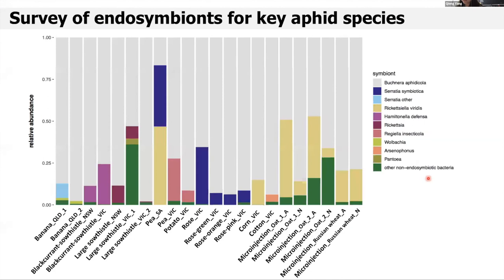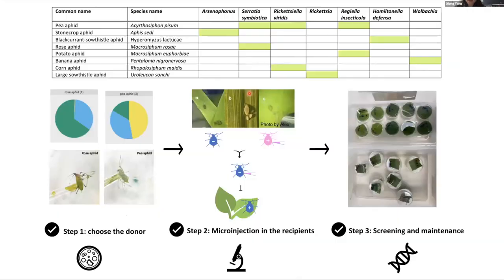First, we conducted a survey of endosymbionts for key aphid species in Australia. We want to select endosymbiont species as candidates for downstream microinjection. The bar chart here shows the interesting secondary endosymbionts we have found so far. We found Serratia in rose aphid and pea aphid. We also found Rickettsiella in corn aphid and pea aphid, and so on. The primary endosymbiont Buchnera, colored in gray, was identified in all samples and was by far the most abundant taxon. Based on those screening results, pea aphid and rose aphid have been used as donors for microinjection. We have established stable Rickettsiella-infected oat aphid and green peach aphid colonies through microinjection.